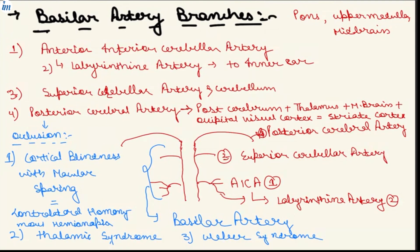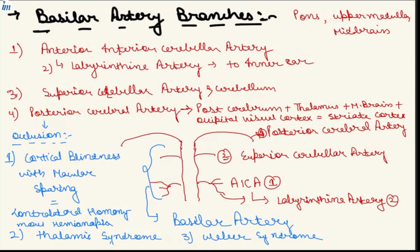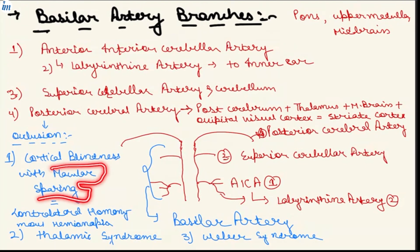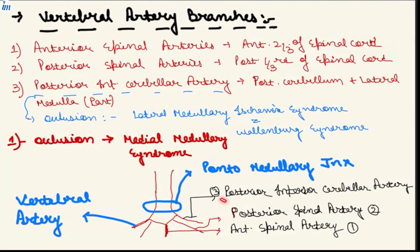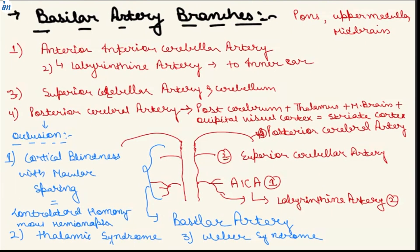If the posterior cerebral artery gets blocked, the person will have cortical blindness with macular sparing, because the macula is also supplied by the middle cerebral artery. Since this artery supplies the thalamus, the person will have thalamic syndrome. Since it also supplies the midbrain, the person will have Weber syndrome. We have now covered two artery blocks: posterior cerebral artery and posterior inferior cerebellar artery, each with different manifestations.